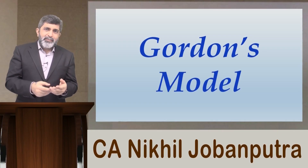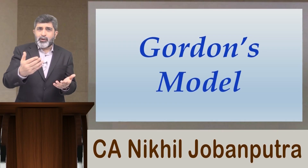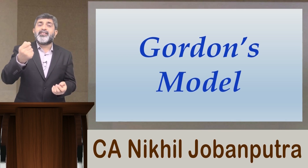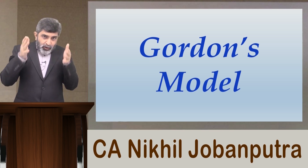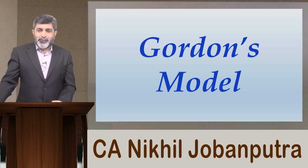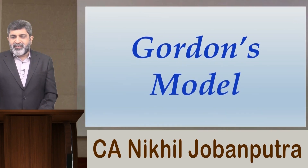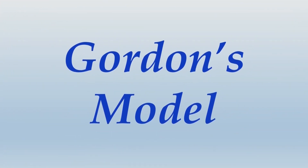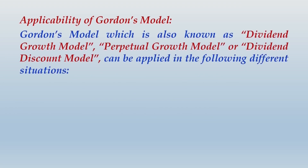Gordon's model is known by many names: perpetual growth model, dividend growth model, and dividend discount model. Within Gordon's model there are various possibilities. Under the heading of Gordon's model, when you write applicability of Gordon's model, you would note that Gordon's model can be applied in the following different situations. Number one is a situation of constant growth.